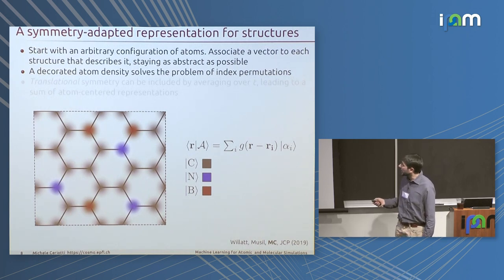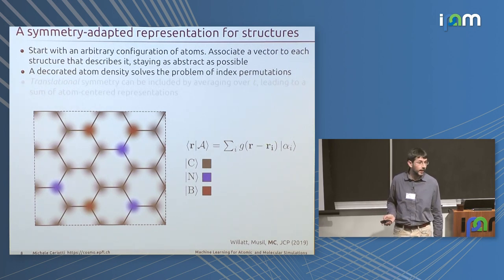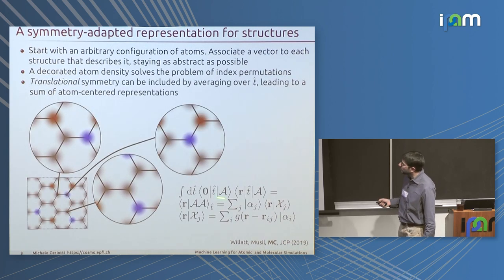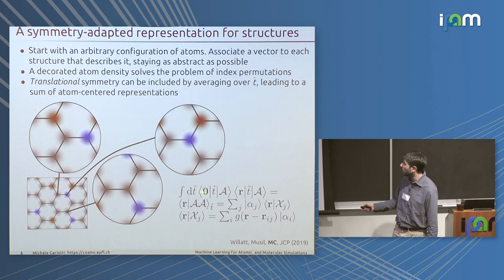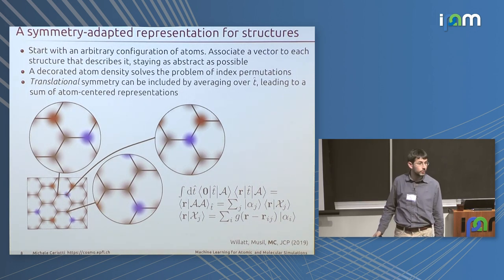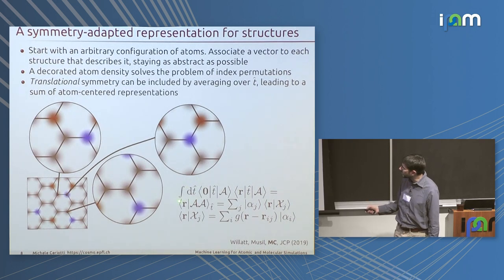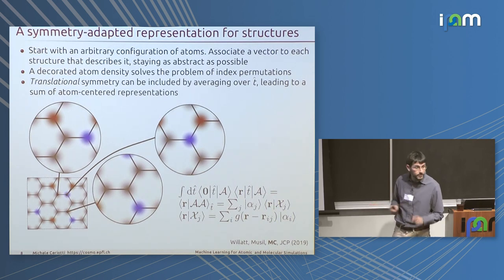We can symmetrize this representation by integrating over the translation group. However, integrating directly over the translation group would eliminate information on where the Gaussians are located. To avoid that, you symmetrize tensor products of this vector — evaluating the density at two points and symmetrizing over the translation group. You can apply this to third-order or any order of products. Stopping at second order is nice because after performing this integral, you correlate two Gaussian densities, and the result is still a Gaussian centered at the distance between two atoms.